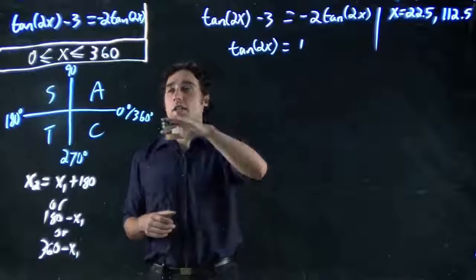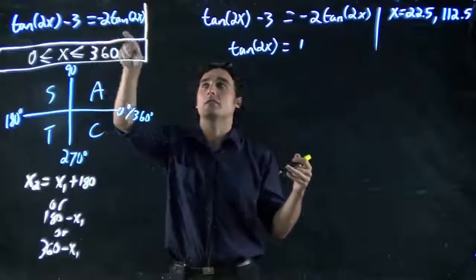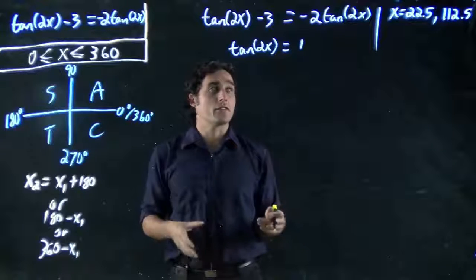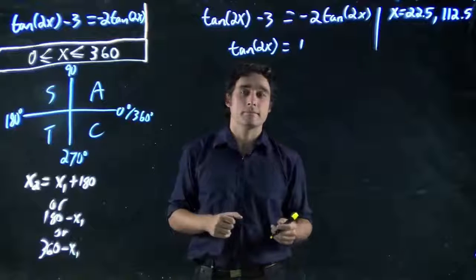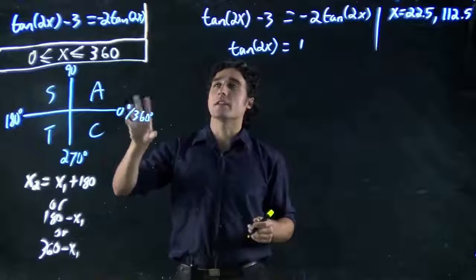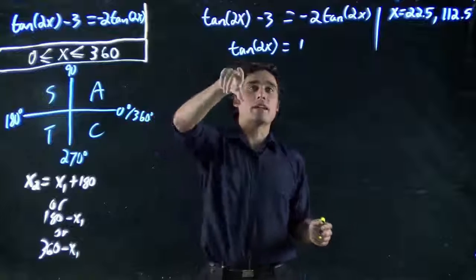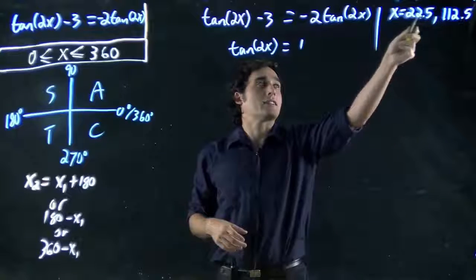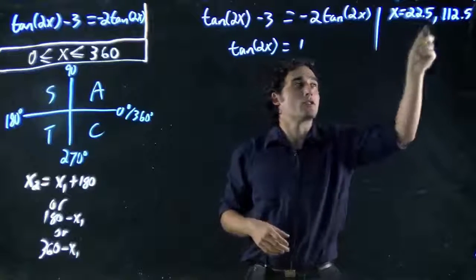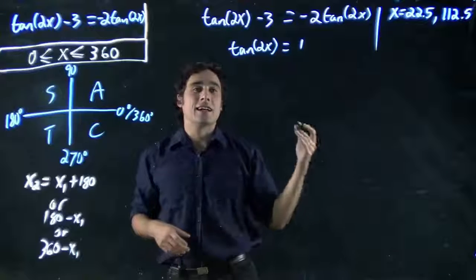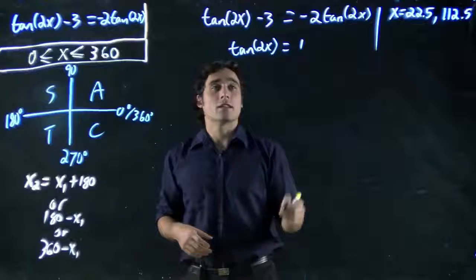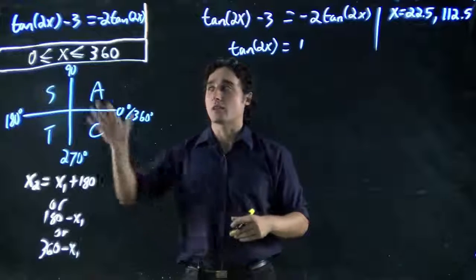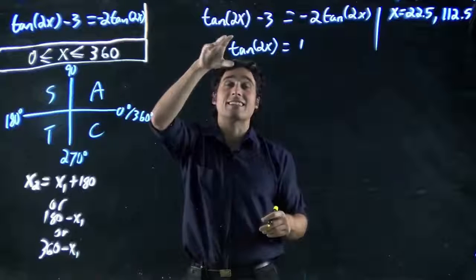So we just finished looking at this problem. Tan(2x) - 3 equals -2tan(2x). But we actually didn't solve it all the way through. If we didn't get to the final solution, there's still a couple steps we missed, actually. So so far in this problem, we had simplified it down and got it as tan(2x) equals 1 and solved for our first two values of x. x equals 22.5 and 112.5, both viable answers. But they're not potentially the only answers. The big trick here is that we have a number in front of the x.